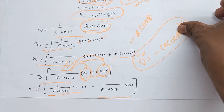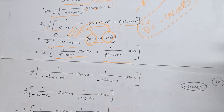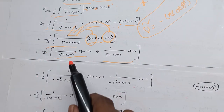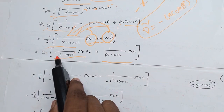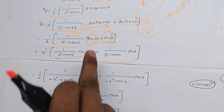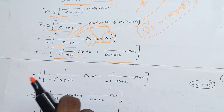So we get 1 by 2, and for the sin 5x term, D squared is replaced by minus 5 squared, giving minus 25.